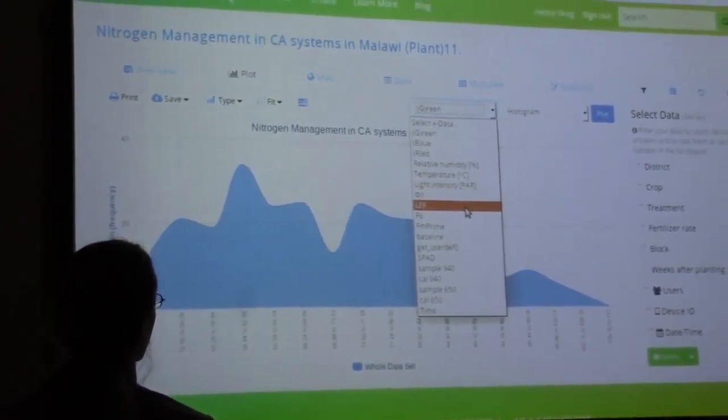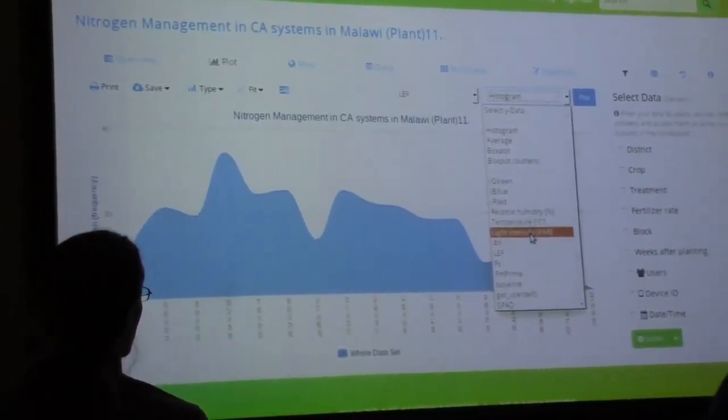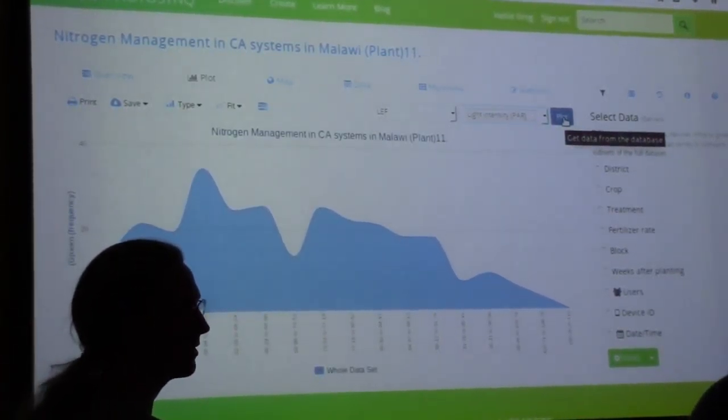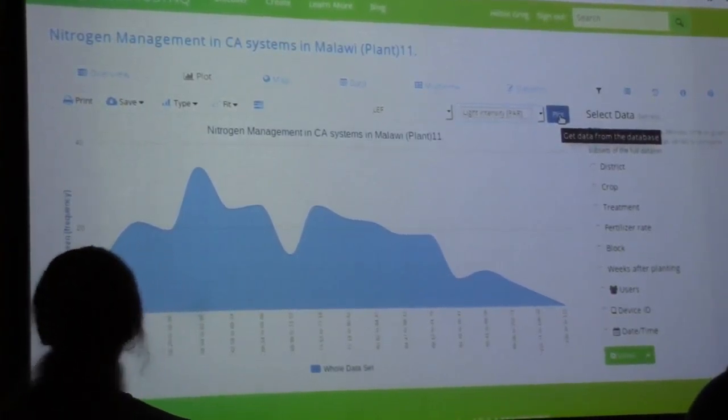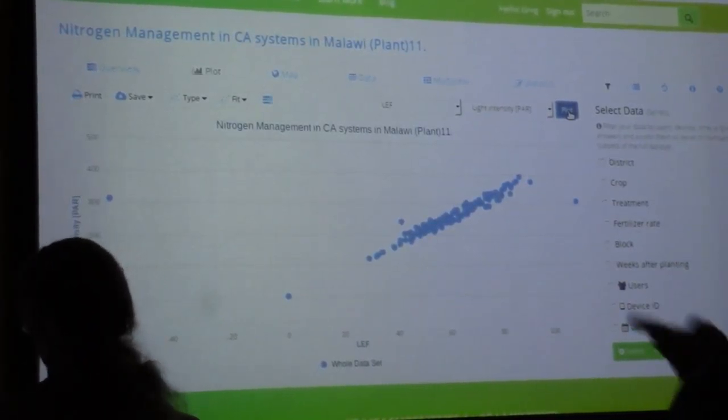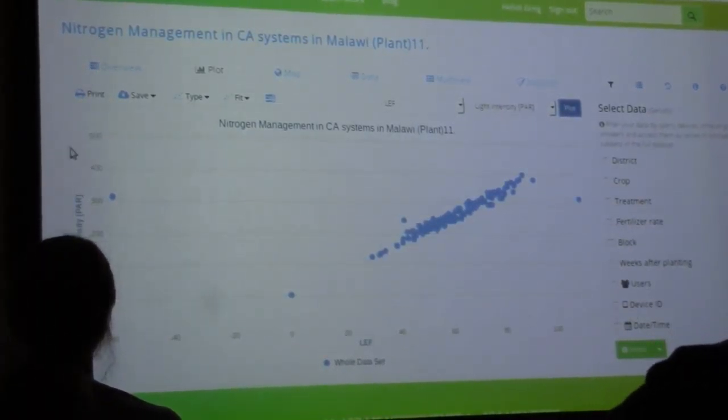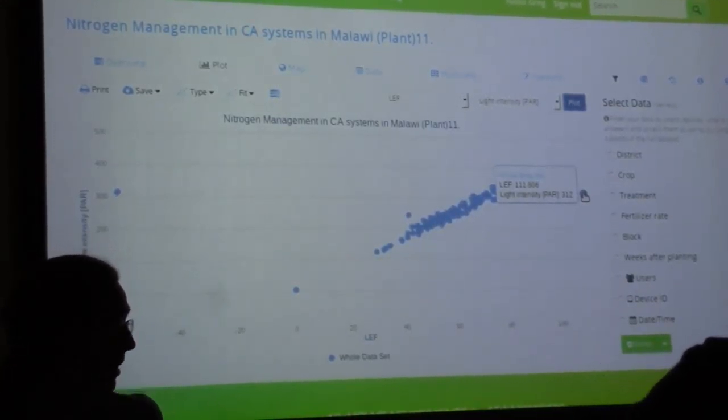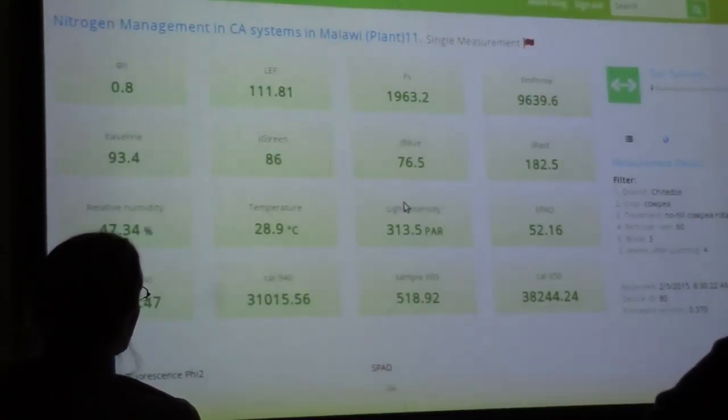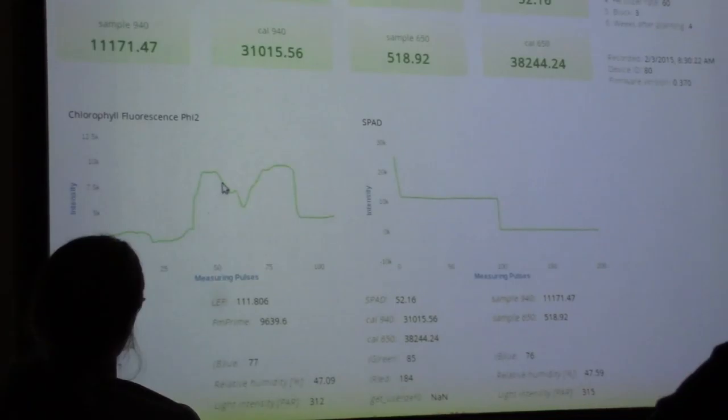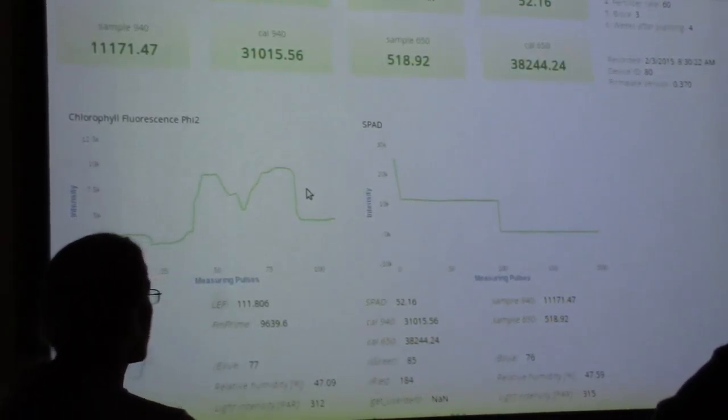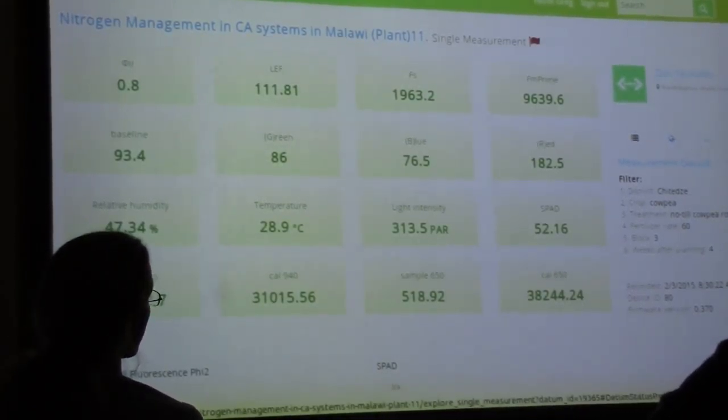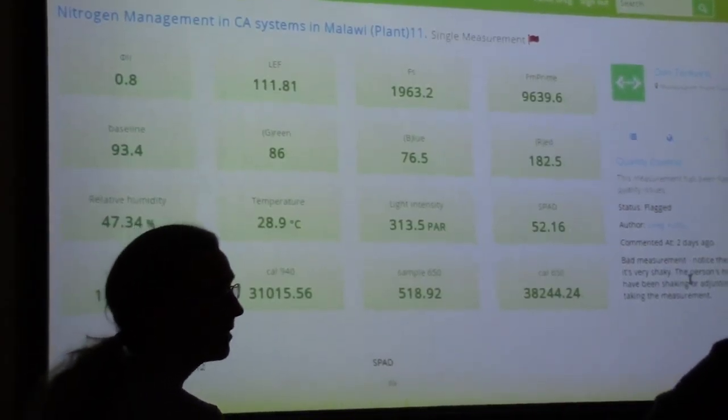But if you go to plot, you can start to plot any of those outputs that you saw on the screen: Phi 2, FS, FM prime, all that stuff is going to show up here. So let's look at LEF by light intensity. And this is something you probably want to look at because it tells you pretty quickly if your data is reasonable or if it's sort of crappy, because it should always pretty much look like that. So linear electron flow goes up as light intensity goes up. And if there's something way off the line like this guy, it's suspect, right?